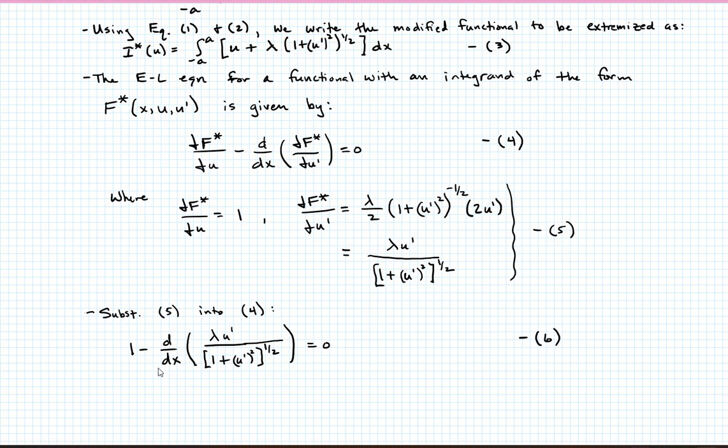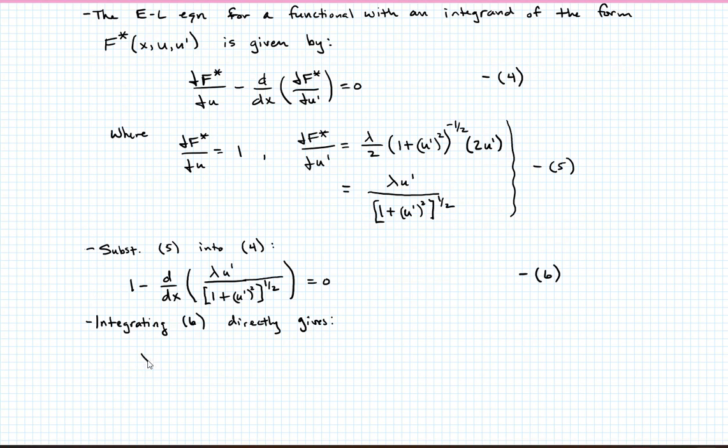I can bring this quantity to one side or the other and leave the 1 on the other side and integrate it directly. So integrating 6 directly gives the following. We end up with lambda u prime divided by 1 plus u prime squared to the 1 half is equal to x minus c1. I could have said x plus c1, but I know where I'm going. It's going to be a little easier to recognize the solution if we use a minus sign here. So this will be equation 7.